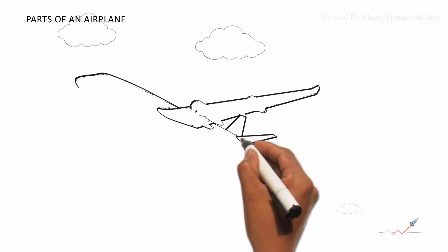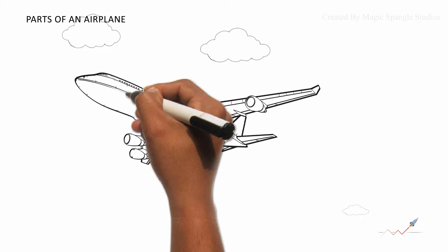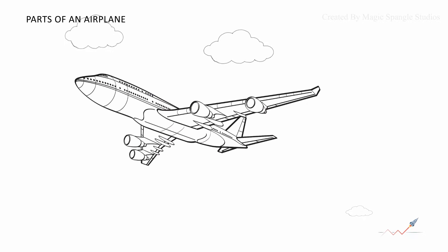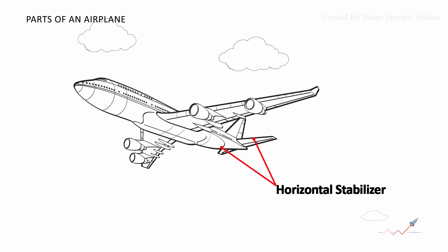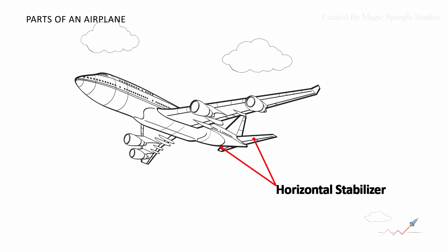Stabilizer. Stability in an airplane is a tendency to return to its initial state after a disturbance from that state. Horizontal stabilizer performs this function when the disturbance force causes the nose of an airplane to move up or down. Such movement is called pitch.